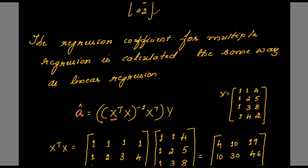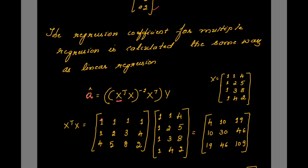First, take the transpose of matrix X. Transpose means all row elements are written as columns and column elements as rows. X is: [1,1,1,1; 1,2,3,4; 4,5,8,2] and the transpose of X is: [1,1,1,1; 1,2,3,4; 4,5,8,2] transposed. When you multiply X transpose with X, the product is: first row 4, 10, 19; second row 10, 30, 46; third row 19, 46, 109.